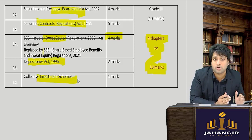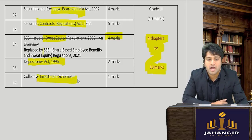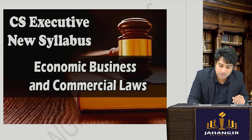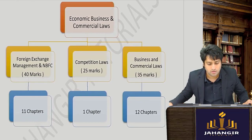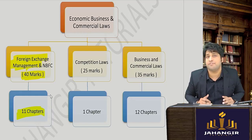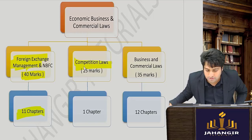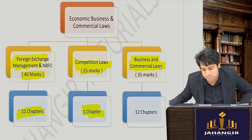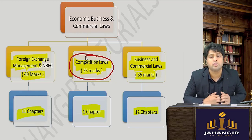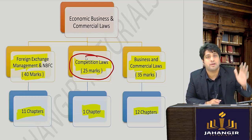The next law subject is EBCL — Economic, Business and Commercial Laws. Part A covering FEMA is for 40 marks across 11 chapters. Students find it technical but it is actually very simple. Competition Law is just one chapter carrying 25 marks, and Business and Commercial Laws has 12 chapters for only 35 marks. No points for guessing: the most important chapter is Competition Law — one chapter, 25 marks — so it makes perfect sense to master this chapter.